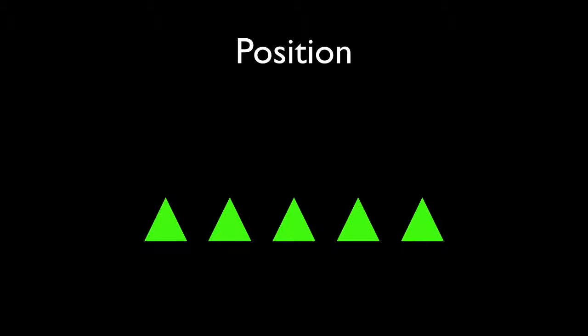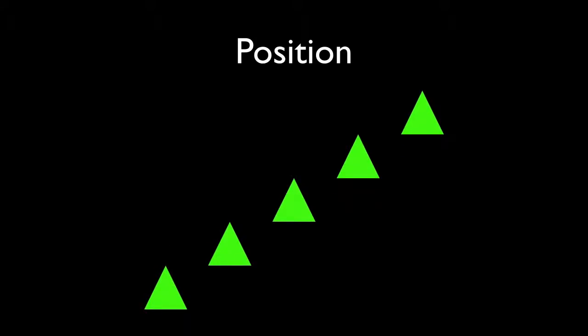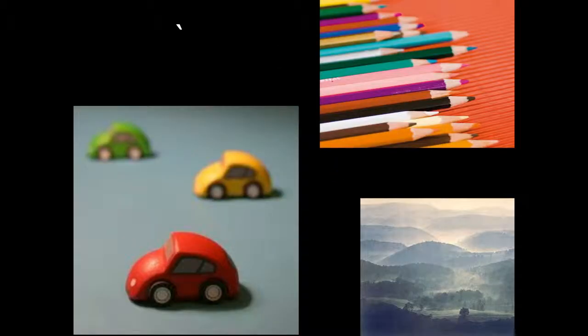Position is another thing that really shows depth, and one a lot of people don't think of. We typically look down on things, especially in landscapes. Most objects we see in landscapes are from a top-down view, so objects on the bottom appear closer and objects on the top appear farther away.